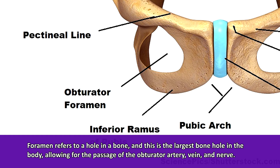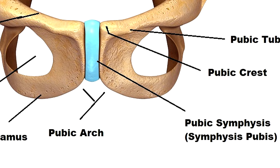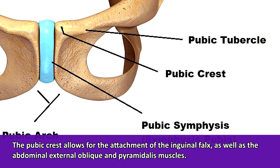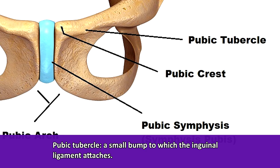I remember back in college, an anatomy professor told us to remember the obturator muscle by picturing a smooth obturator — a memory trick I've always kept. On the anterior or front side of the pubis body, you'll find a rim of bone called the pubic crest, which allows for the attachment of the inguinal ligament as well as the abdominal external oblique and pyramidalis muscles. There's also a small bump where the pubic crest laterally joins with the superior pubic ramus called the pubic tubercle, and the inguinal ligament attaches to this.